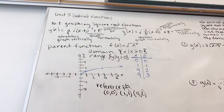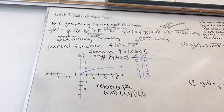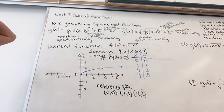Today we're looking at graphing square root functions. We've got A, H, and K back — the vertical translations and the horizontal translations. A stretches the graph vertically, and B stretches the graph horizontally. The function itself looks different, but the values A, B, H, and K have the same rules on our functions.